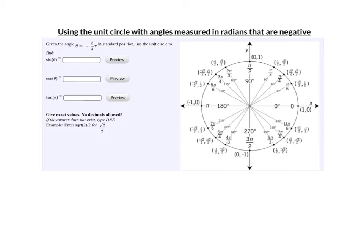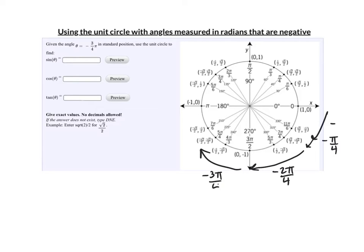So if theta is negative 3 pi over 4, find the sine, cosine, and tangent. So we're going in the negative direction. If I go 45 degrees right there, there is negative pi over 4. I'll go another 45 degrees — that's negative 2 pi over 4. And another 45 degrees is negative 3 pi over 4. Notice where I'm getting the 45 degrees — pi over 4 is 45 degrees. So negative 1 pi over 4, negative 2 pi over 4, negative 3 pi over 4. So I am right here.